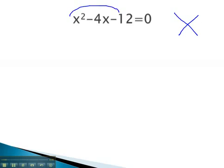Using the AC method, we want to multiply to negative 12 and add to negative 4. A little bit of work tells us that it's 6 and 2, if the 6 is negative.